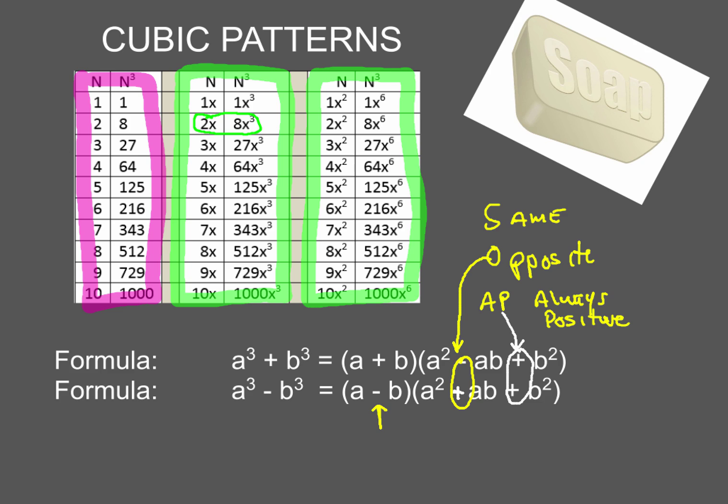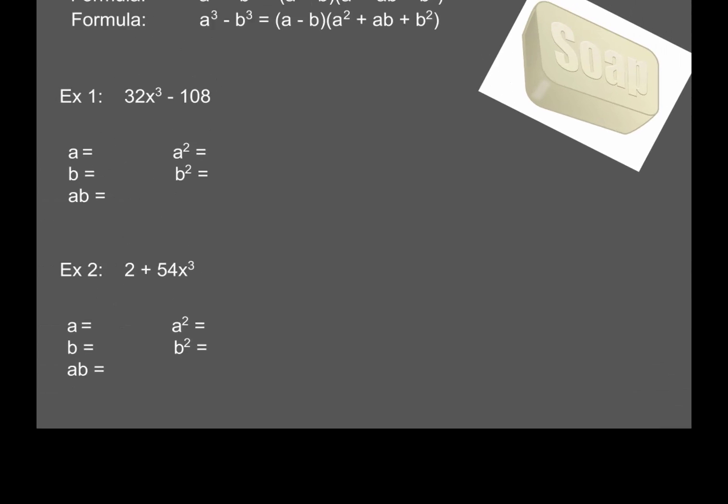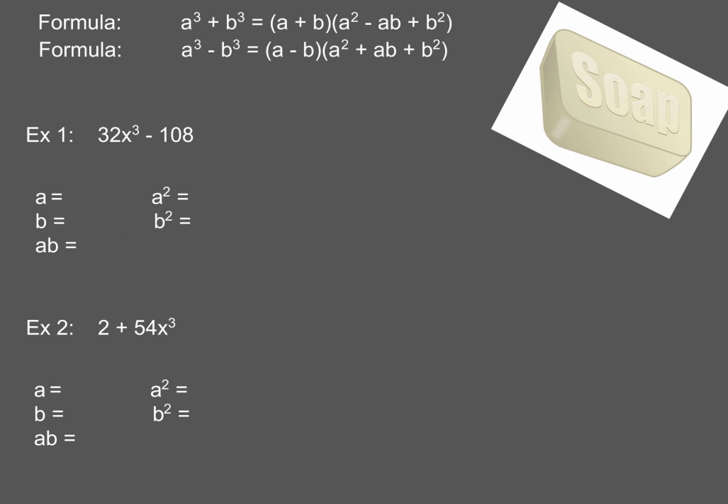Let's take a look at two examples, check it. So, here we go, we've got our two formulas, we've got some SOAP, and here we go, we're going to wash this problem down, check it out. Now, 32x cubed minus 108.